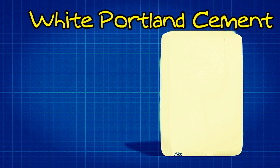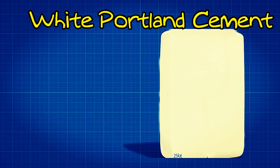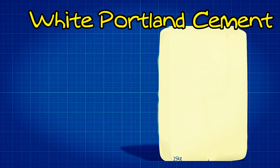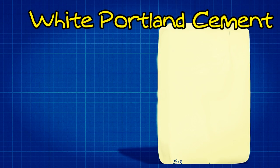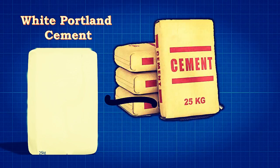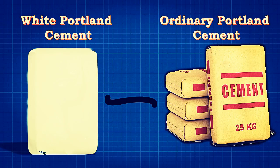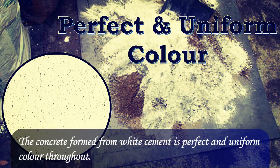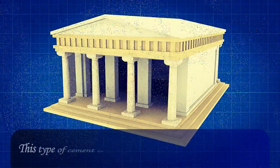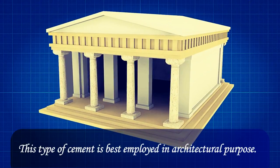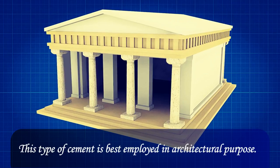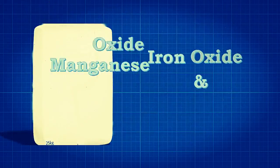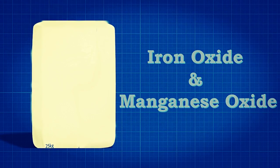White Portland cement is similar to ordinary Portland cement except in its white color. The concrete formed from white cement is perfect and uniform in color throughout. This type of cement is best employed for architectural purposes.